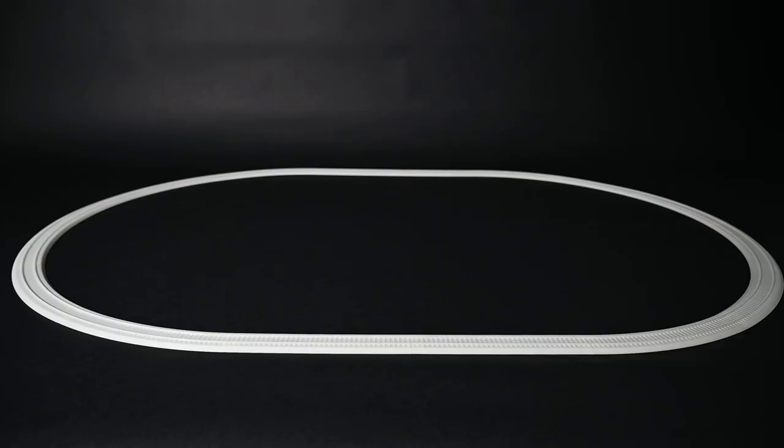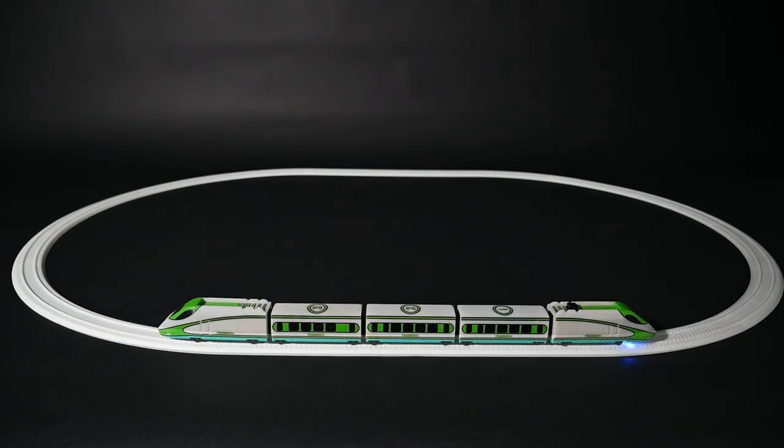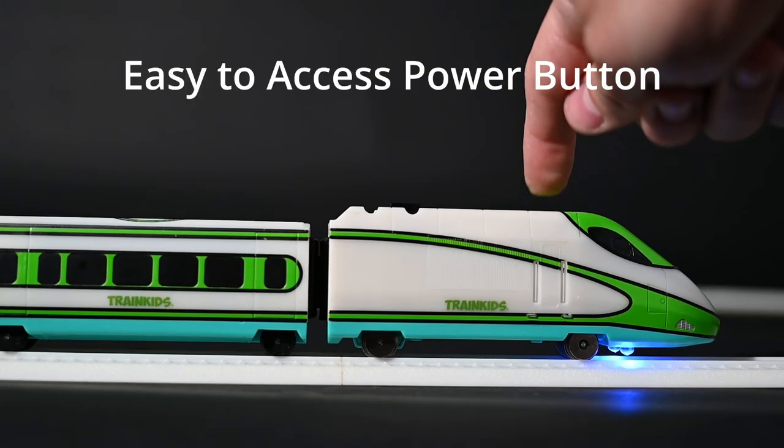The twelve pieces of curved track and four pieces of straight track create a 38-inch by 56-inch oval. With the train on, push the power button and you're ready to run.